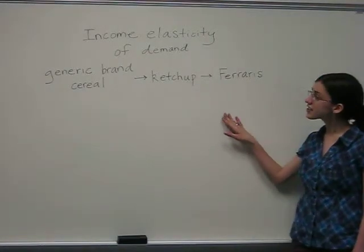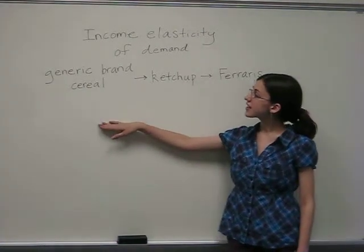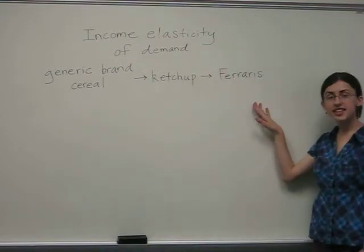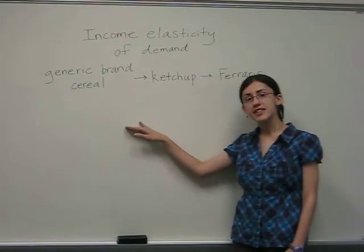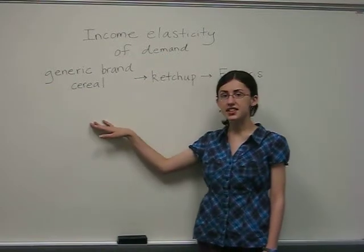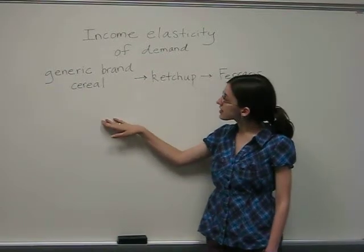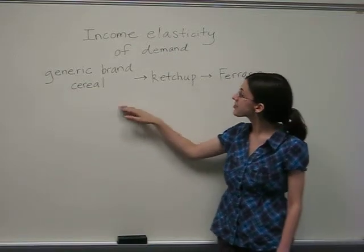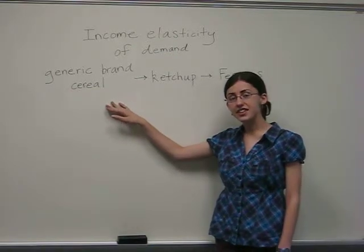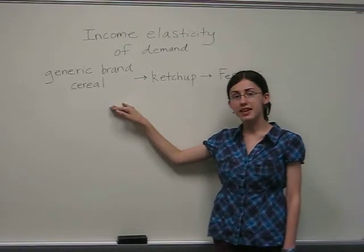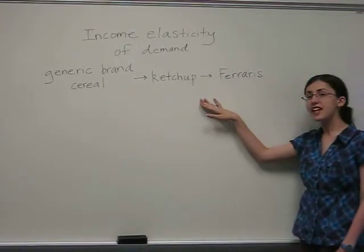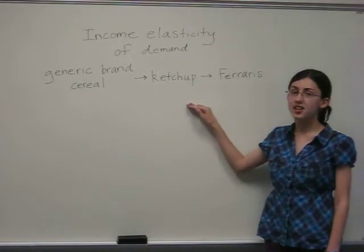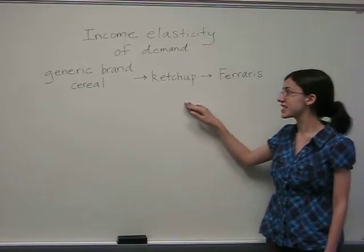Income elasticity of demand ranges from goods that consumers are more likely to buy if their incomes are low to goods they are only likely to buy if their incomes are high. For generic brand cereal, as one's income increases, the demand decreases in favor of other goods such as brand-name cereals. This makes it an inferior good, and its income elasticity of demand is negative. For ketchup, the income elasticity of demand is zero because no matter one's income, if you like ketchup, you're probably going to buy it.